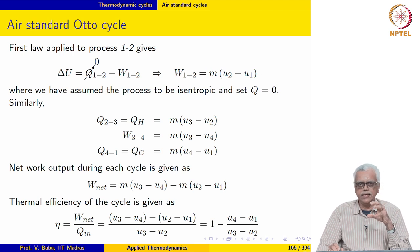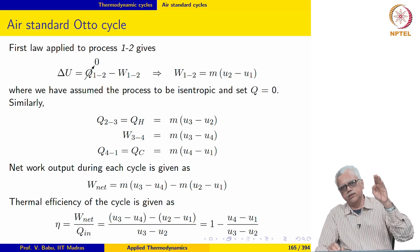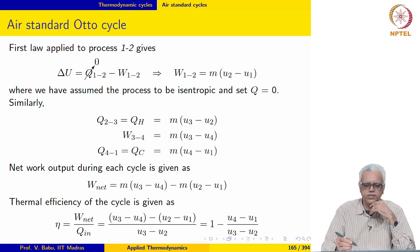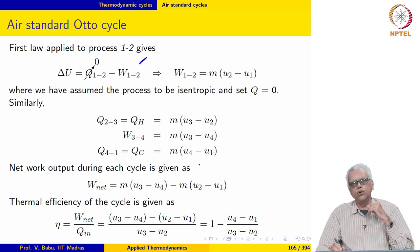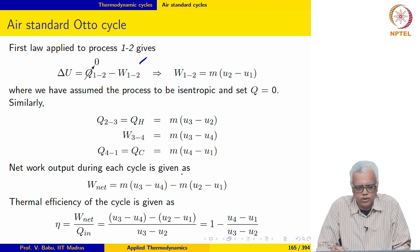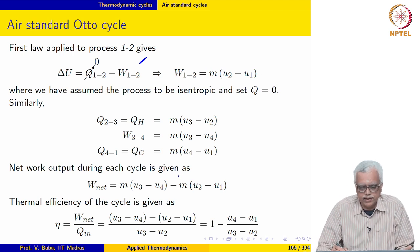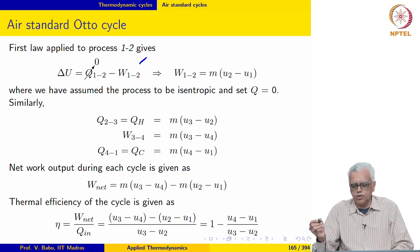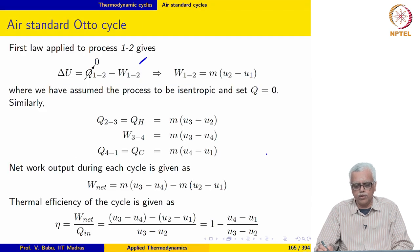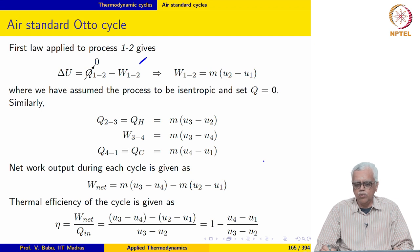We have a fixed quantity of air in each cylinder executing compression, heat addition, expansion, and heat rejection — so we cannot use the steady flow energy equation. We use the non-flow form of the first law. So delta U = Q - W. For process 1-2, an isentropic compression, Q = 0 and W₁₂ = M(U₂ - U₁).